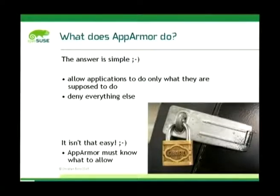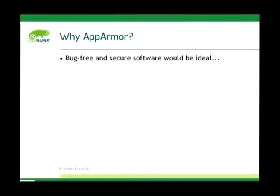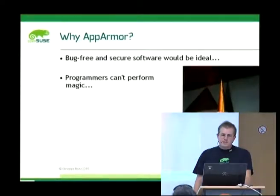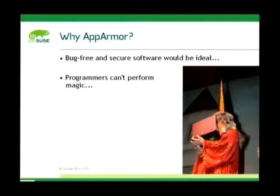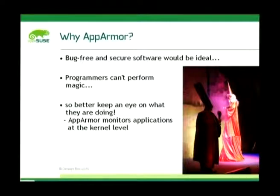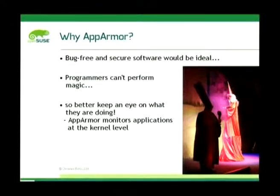So what does AppArmor do? The answer is quite simple: it allows applications to do only what they are supposed to do and denies everything else. But it isn't that easy because first it must know what is allowed. In a perfect world you have bug-free and secure software, but programmers can't perform magic, so you better keep an eye on what we are doing. AppArmor will monitor the applications on the kernel level.